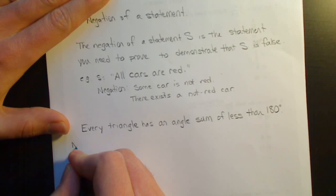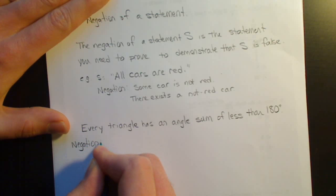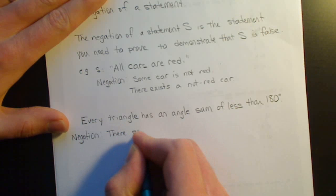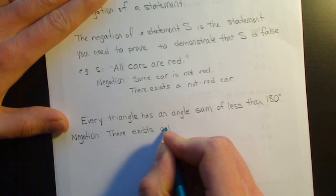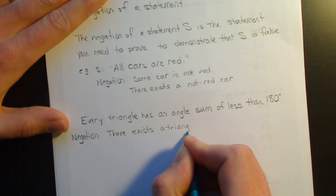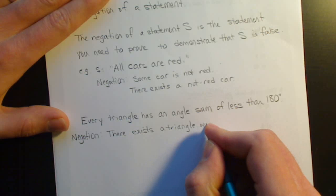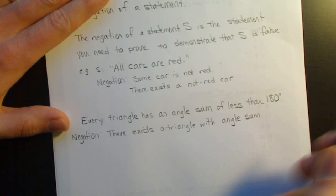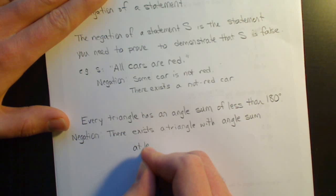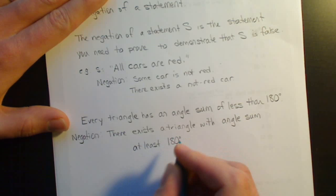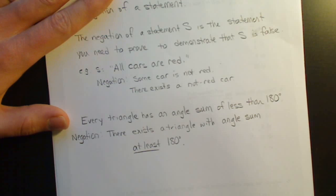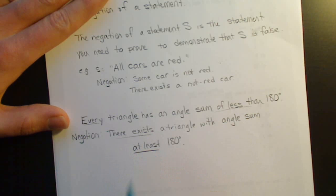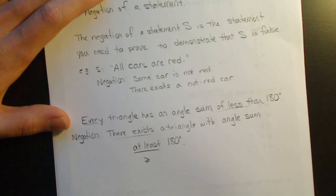The negation, the way to prove this statement wrong, is simply there exists a triangle with angle sum at least 180 degrees. You change the every into a there exists and the less than into at least. Remember, at least is greater than or equal to.